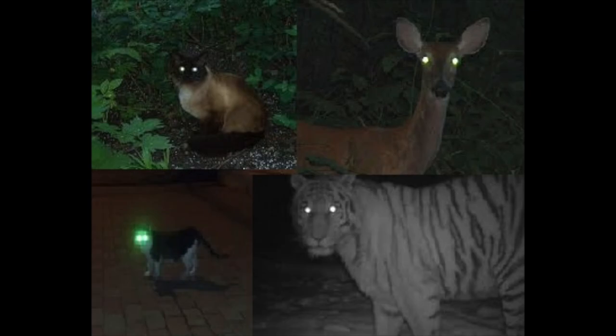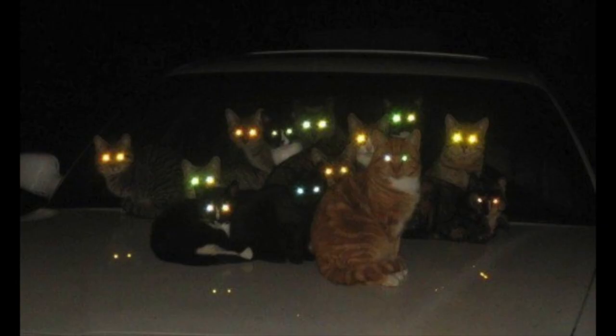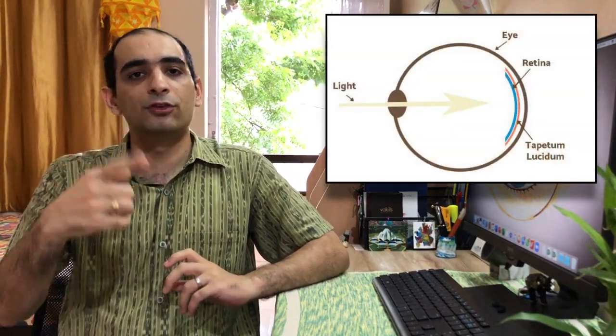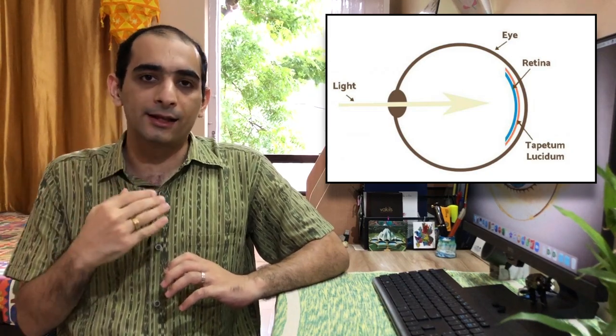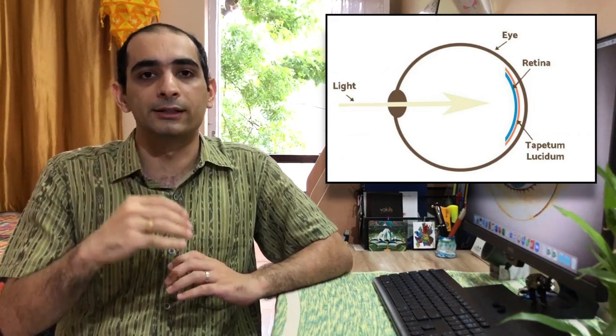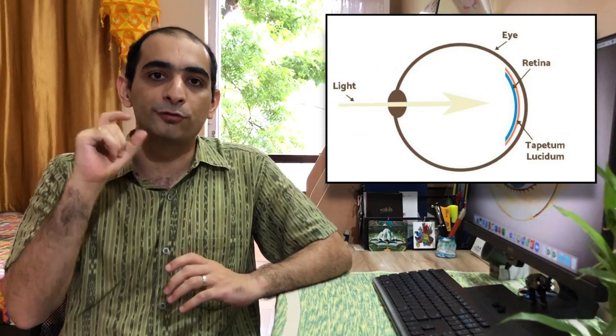If you notice anything unusual about your child's eyes in photos, consult an eye care practitioner immediately. Here's an interesting fact about animal eyes: white, yellow, or green glow reflecting from the eyes of dogs, cats, deer, and other animals is caused by a structure called the tapetum lucidum. This is a tissue lying immediately behind the retina in many vertebrates that acts as a retro-reflector, reflecting visible light back through the retina to increase the light available to photoreceptors — which is the reason behind the superior night vision of some animals.